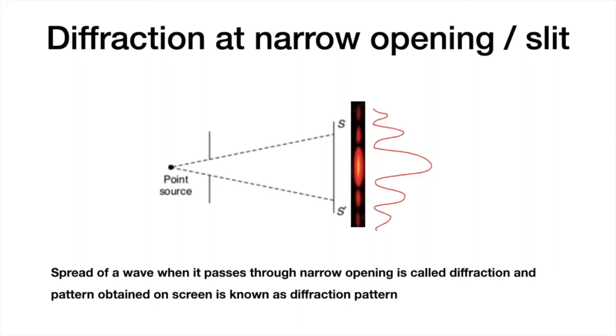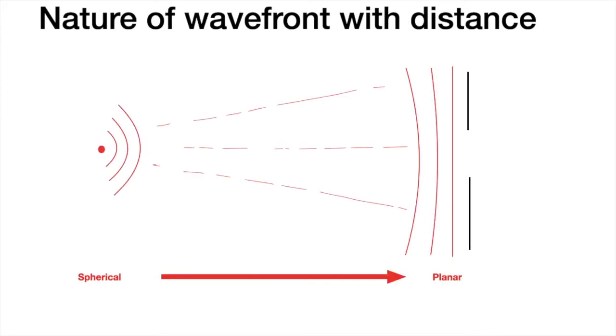Diffraction pattern very much depends upon the nature of the wavefront. So if we have a point source, it gives out a spherical wavefront, but if and only if we are very close to that source.